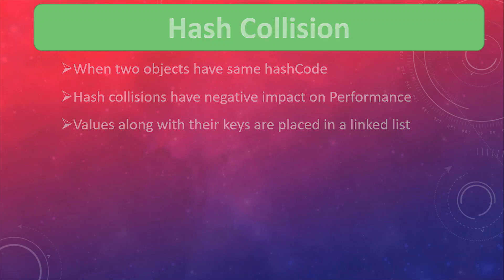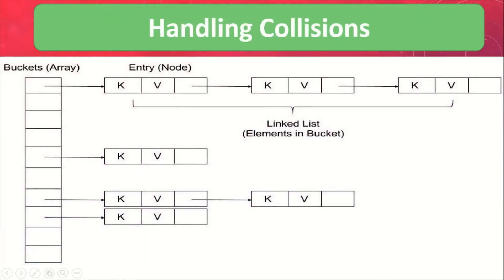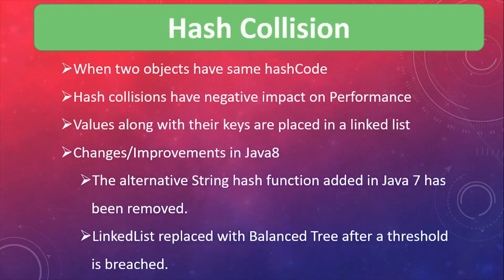Before Java 8, any number of hash collisions would result in all key-value pairs being stored in a linked list under the same bucket. For example, if there is a first key-value pair with index zero, and another key-value pair also gets index zero, it will be added as the next element of the linked list. In case of retrieval, the linked list has to be traversed. In the worst case scenario, when all keys are mapped to the same bucket, lookup time increases from O(1) to O(n), which is very high.